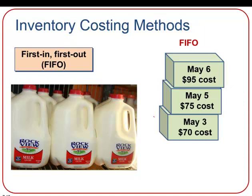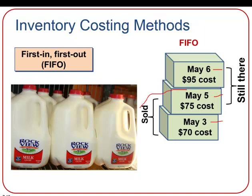In this example, there are three items purchased: one on May 3rd, one on May 5th, and one on May 6th. Under FIFO, we assume the first ones in are the first ones out. If we sell two of these three, the two that sell are the oldest — May 3rd and May 5th — and the remaining unit is the most recent, May 6th. First in, first out.